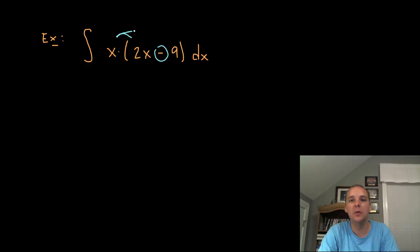We could distribute the x, and then we have the integral of 2x² minus 9x dx. Now it is a sum and difference rule because we just have these two individual terms added or subtracted.